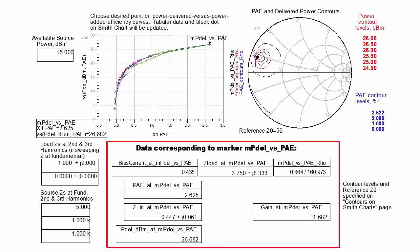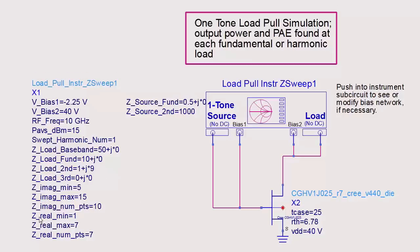This data display page shows power delivered versus PAE, contours, and data corresponding to a load selected by the marker. The power added efficiency is quite low. This is likely due to driving the device well below compression and using a suboptimal source impedance. Let's refine the sampled loads to be closer to the optimum and set the source impedance to be the complex conjugate of the input impedance.